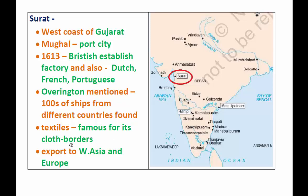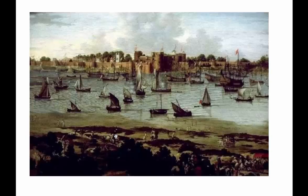Surat was very famous for its textiles, particularly for its cloth borders. Surat and its adjoining areas produced a great deal of cotton, which was exported through the port to West Asia — Iran, Iraq, Persia, Mesopotamia — and even to Europe, including the Roman Empire, Italy, and England.